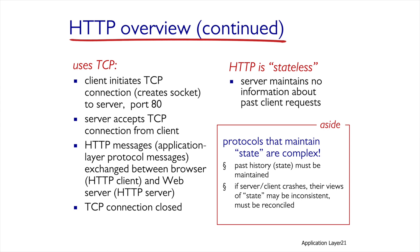HTTP uses TCP because what is required is reliable traffic for which a small delay can be tolerated. The server opens a socket and listens to port 80 for the client's connection requests. The client opens a socket on its end and uses some port that it will report to the server in the future.